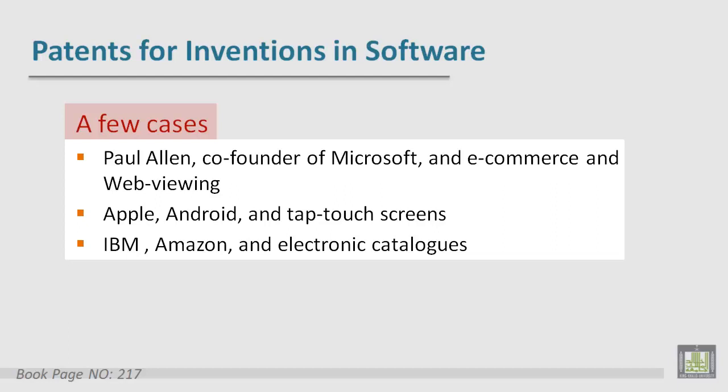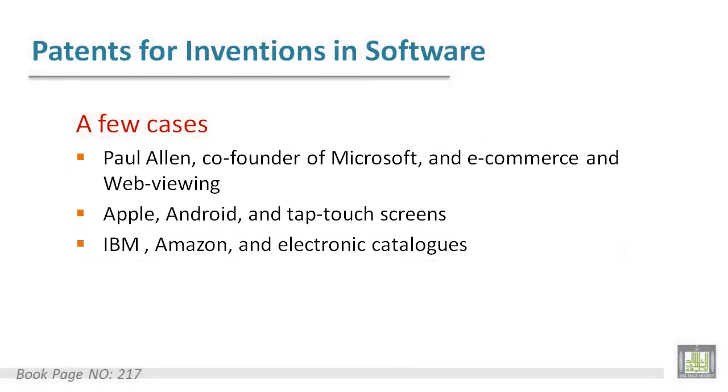The third case regards IBM, Amazon, and electronic catalogs. IBM sued Amazon for violating a patent on electronic catalogs that covers targeting advertising and recommending specific products to a customer. Eventually, Amazon agreed to pay IBM a licensing fee.